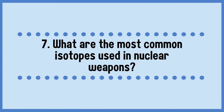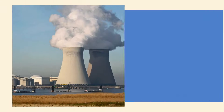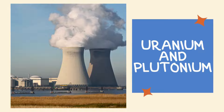What are the most common isotopes used in nuclear weapons? The answer is uranium and plutonium.